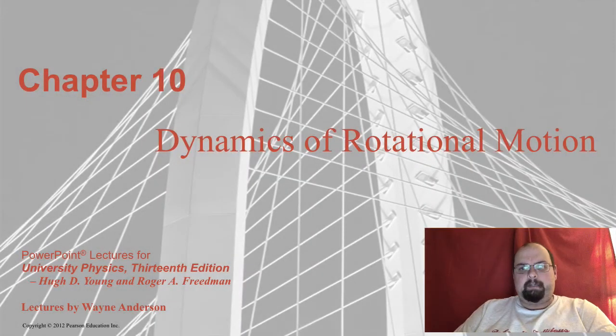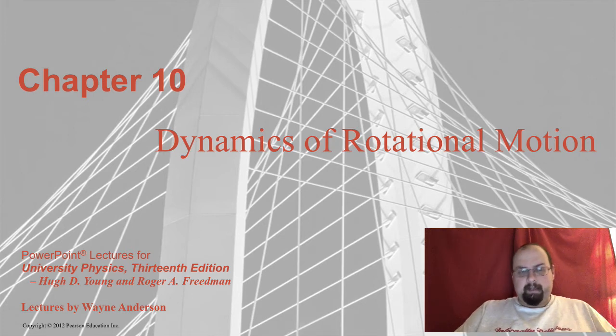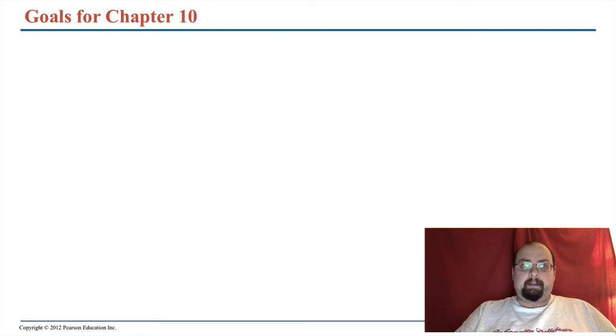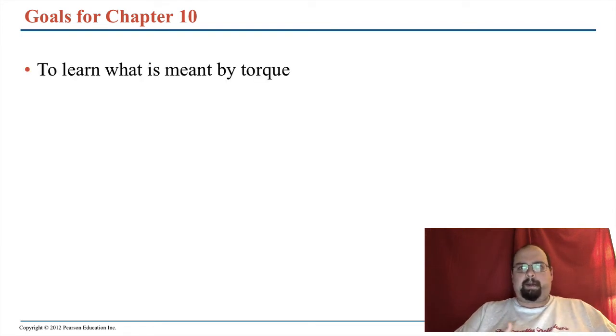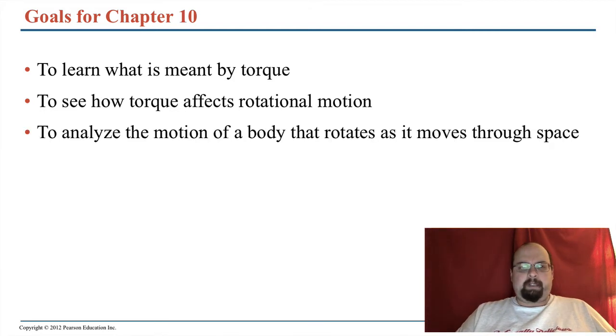Okay, chapter 10 is rotational dynamics. We finished rotational kinematics in the previous chapter. So we're going to do the analogy of forces here, and that analogy is the word torque. A torque is to a turning object what a force is to a linearly moving object. We're going to talk about its effect on rotational motion and what the analogy is for mass in order to do that.